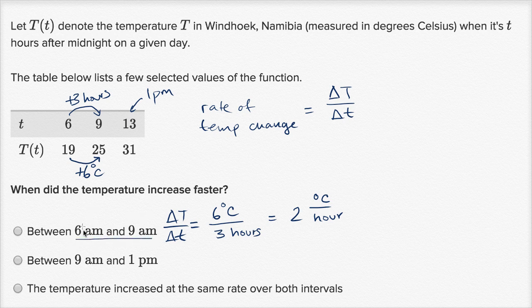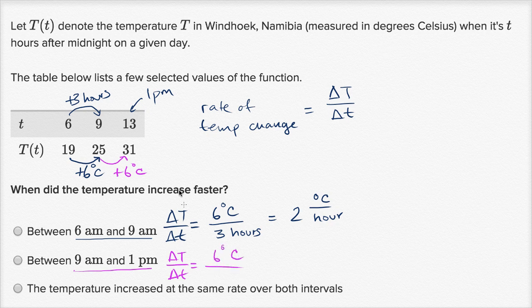Now between 9 a.m. and 1 p.m., our change in temperature over change in time. Our temperature goes up from 25 to 31 degrees Celsius, that's another 6 degrees Celsius. But to go from 9 hours after midnight to 13 hours after midnight, we're now doing it over 4 hours. So 6 degrees Celsius over 4 hours.